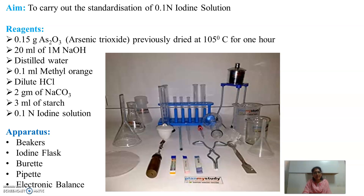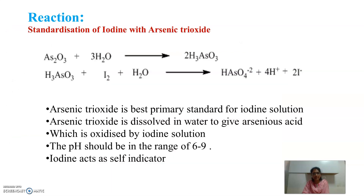The reagents required are: 0.15 grams of arsenic trioxide, previously dried at 105 degrees centigrade for one hour; 20 ml of 1 molar NaOH solution; distilled water; 0.1 ml methyl orange; dilute hydrochloric acid; 2 grams of sodium carbonate; 3 ml of starch; and 0.1 N solution of iodine.